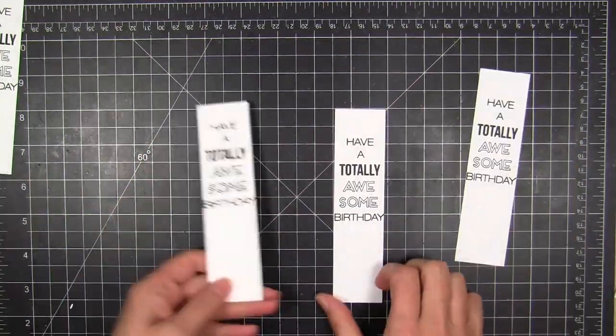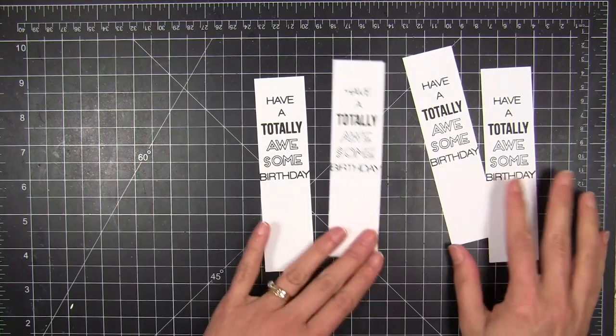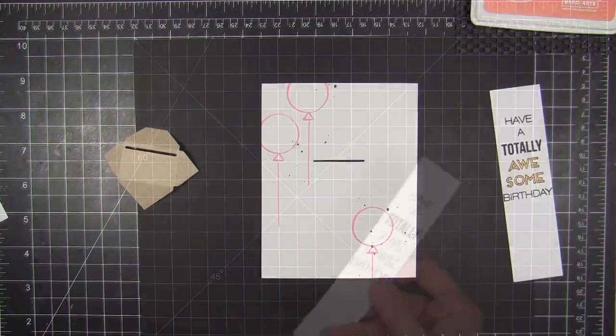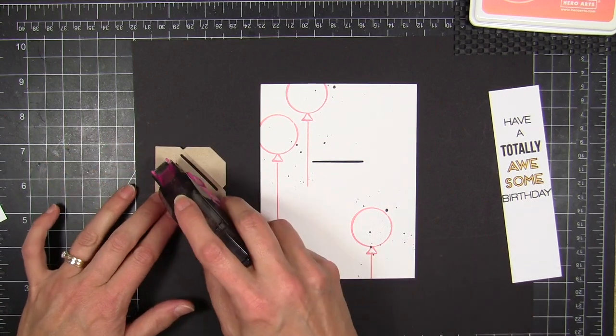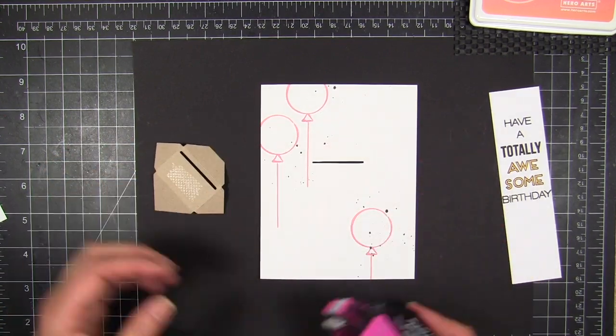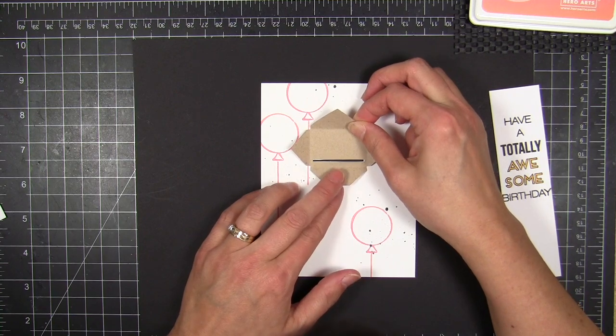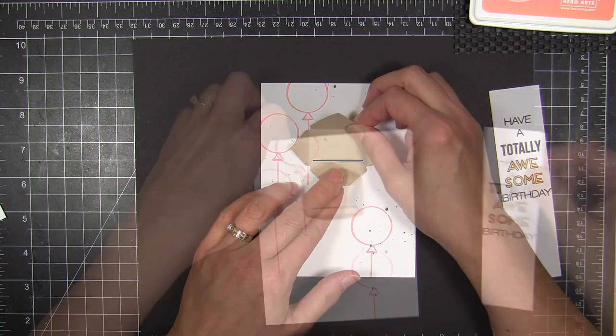So now I'm going to go ahead and stamp these. I already lined up my stamps and stamped a whole bunch of them so they're ready to go anytime I want to make one of these. So that's kind of a good tip for mass production or anytime you need a last minute card and you want it to have a fun feature like that. Get those strips already ready to go and have them stored somewhere handy.